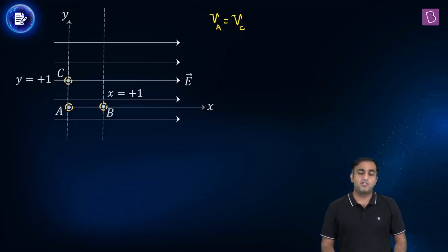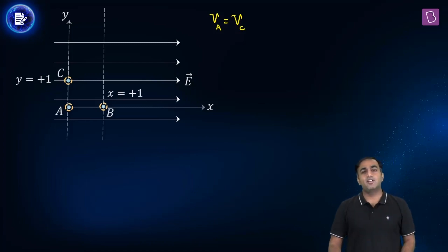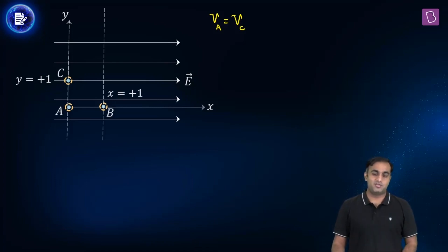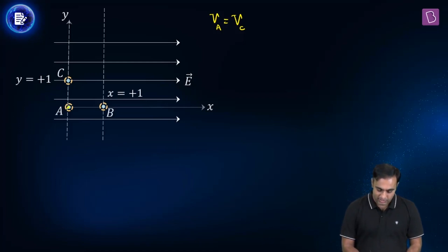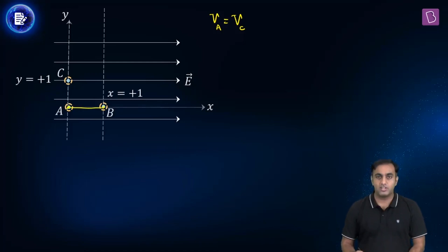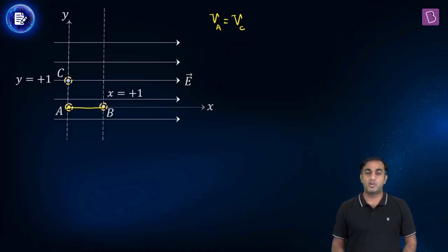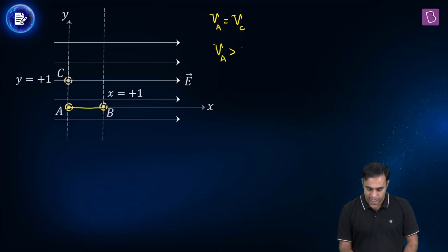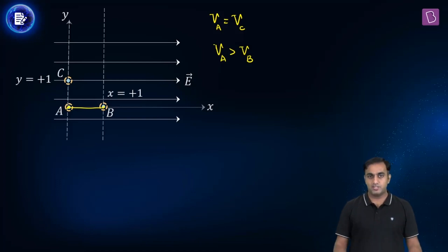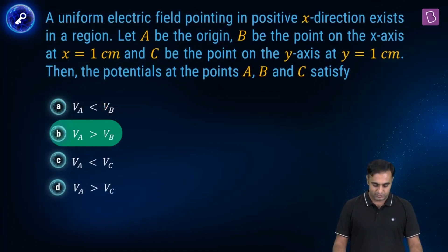The second fact is that if you go along the direction of the electric field, the electric potential decreases at the highest rate. Going from A to B, you move along the direction of the electric field, so potential decreases. Therefore VA is greater than VB. With these deductions, the correct option turns out to be B.